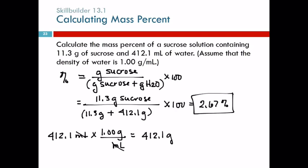So the mass percent of that solution is 2.67%. That means there are 2.67 grams of sucrose for every 100 grams of solution. Any questions?